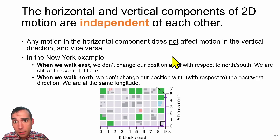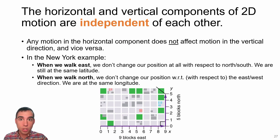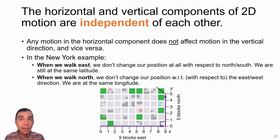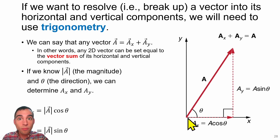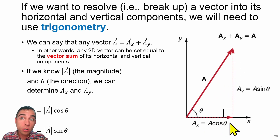What's really important about two-dimensional motion is recognizing that motion in the horizontal direction is completely independent from motion in the vertical direction—these two don't affect each other. If an object is accelerating to the right, that has no bearing on whether it moves up or down. If we have a vector that is up and to the right, we can figure out the length of the component vectors—the vertical and horizontal—by using trigonometry.